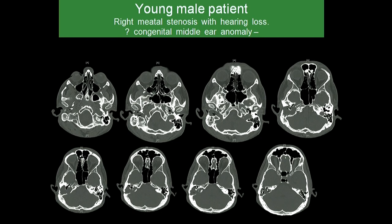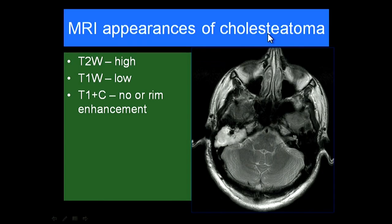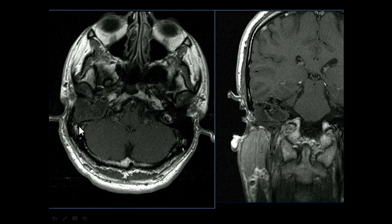A young male presented with meatal stenosis and hearing loss, initially thought to be a congenital middle ear anomaly. There is a large lesion within the right mastoid and middle ear going everywhere — the final diagnosis was congenital cholesteatoma. We also performed MRI: cholesteatoma appears as high signal on T2, low signal on T1, does not show enhancement following contrast because these are non-vascular epithelial cells, and sometimes shows a thin rim enhancement due to marginal granulation.